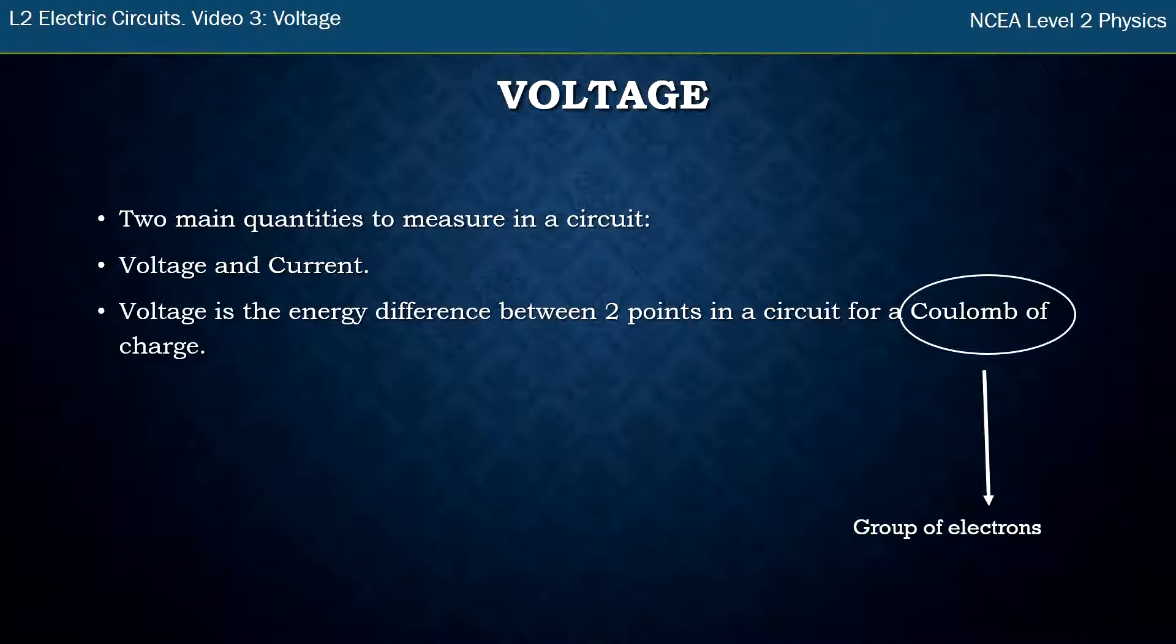Electrons travel around a circuit, and so we're measuring the energy difference between two points for a group of electrons. It's between two points as well, so that's really important. You can't just put a voltmeter in one point in a circuit and measure a voltage. You have to measure between two points.